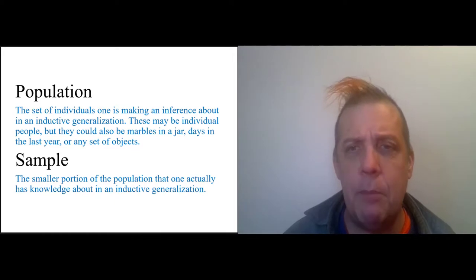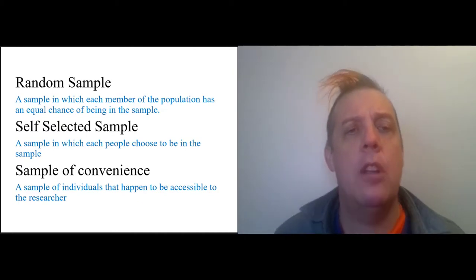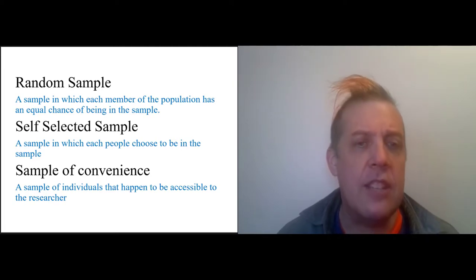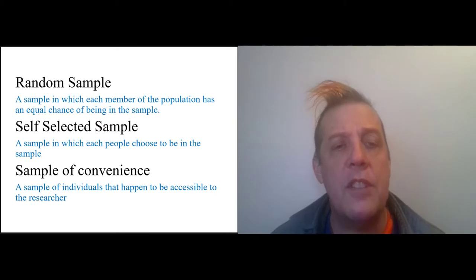The ideal form of sample is what we call a random sample. This is a sample in which each member of the population has an equal chance of being in the sample. That is mathematically defined and that can then just be the perfect sample. The real world is messy, though, and very often things that you are relying on for information about the world were not acquired through completely random sampling.